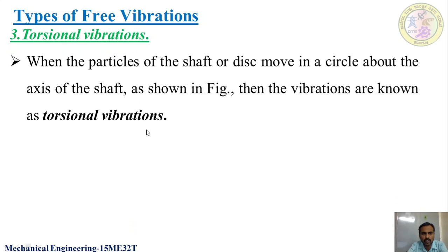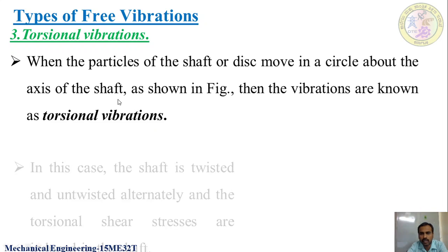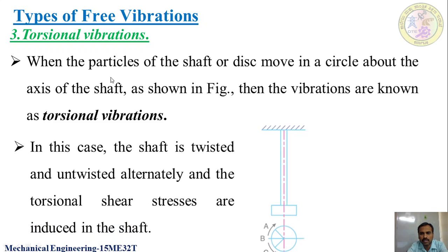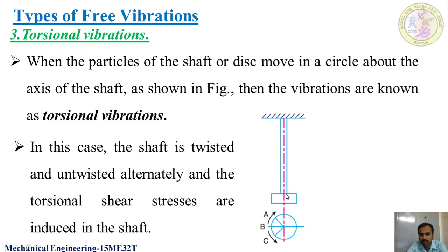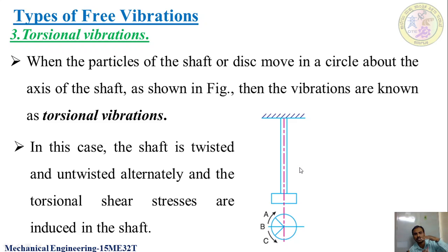The next one is torsional vibrations. In torsional vibrations, when the particles of a shaft or disc move in a circle about the axis of the shaft, the vibrations are said to be torsional vibrations. Here the shaft is twisted — when the disc is subjected to circular movement, the shaft is twisted and untwisted alternately. Because of this, a torsional shear stress will be developed in the shaft.